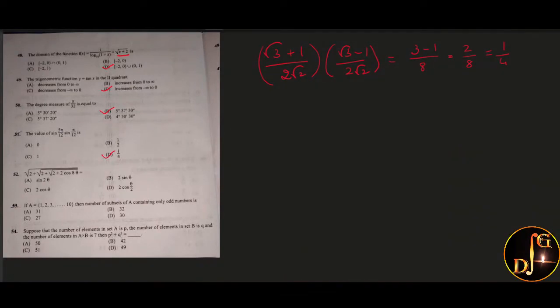Next, root of 2 plus root of 2 plus root of 2 plus 2 cos 8 theta is equal to root of 2 plus root of 2 plus 2 cos 8 theta. Taking 2 common we get 1 plus cos 8 theta. Using the formula 1 plus cos 2 theta equals 2 cos square theta, we get 2 cos 4 theta. Applying the same formula again, 2 plus root of 2 plus 2 cos 4 theta equals 2 cos 2 theta. Again, root of 2 plus 2 cos 2 theta equals 2 cos theta. Therefore, answer is option C, 2 cos theta.